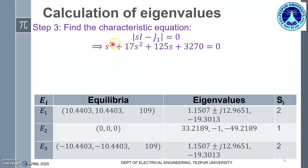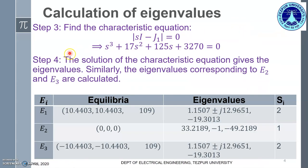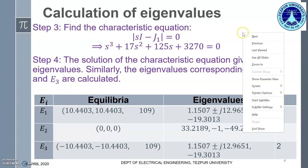On equating it to 0, we get this particular characteristic equation. The next step is to find the solution of this characteristic equation. The solutions of this characteristic equation give us the eigenvalues. Similarly, the eigenvalues corresponding to equilibrium point 2 and equilibrium point 3 can be calculated.